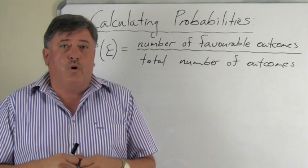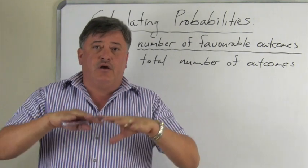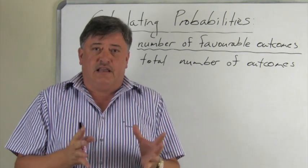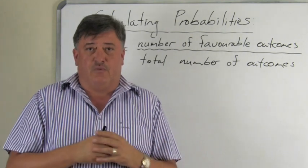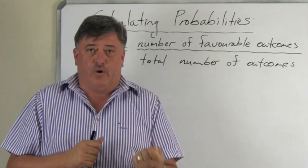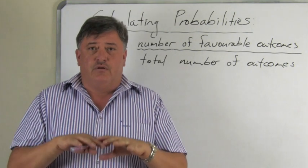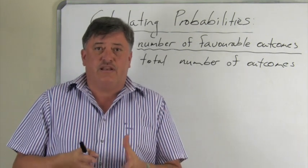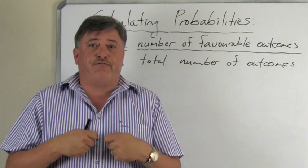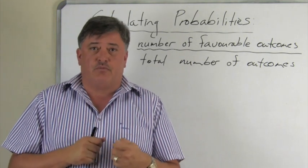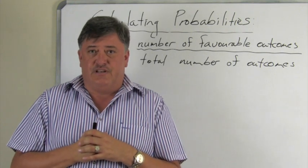For example, if I ask what is the probability of getting a six when rolling a die, that rolling a die and getting a six is called my event — that is what I want. When I toss a coin and I want heads, that is my event. Tossing a coin or rolling a die is called an experiment, but what I want from that experiment is called my event.